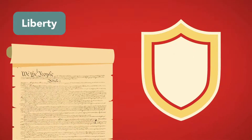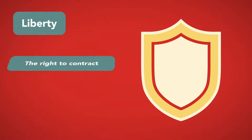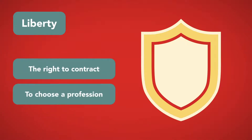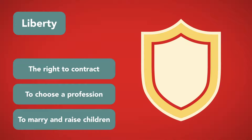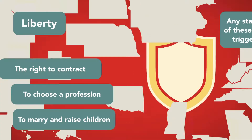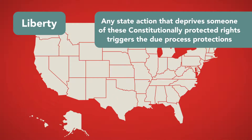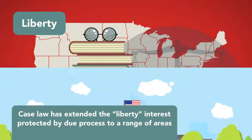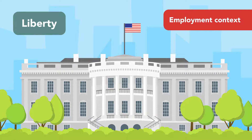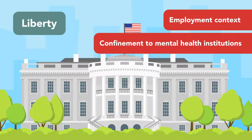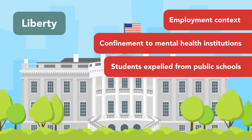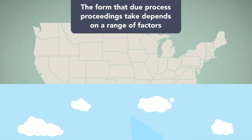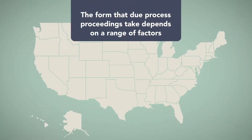Liberty is also protected by the Constitution, and it means more than just freedom from physical constraints. A range of rights, including the right to contract, to choose a profession, and to marry and raise children, are protected by the due process clause. Any state action that deprives someone of these constitutionally protected rights triggers the due process protections. Case law has extended the liberty interest protected by due process to a range of areas in which the government operates, including in the employment context, confinement to mental health institutions, and to students expelled from public schools. As with property interests, the form that due process proceedings take depends on a range of factors.